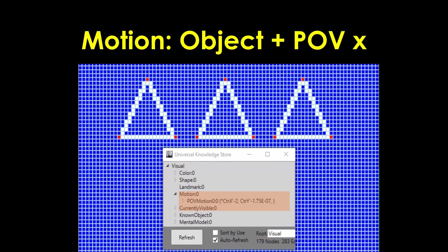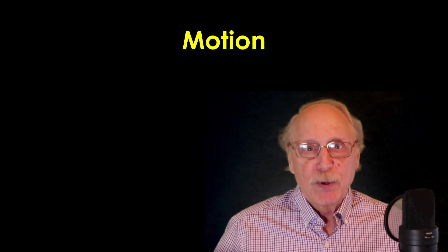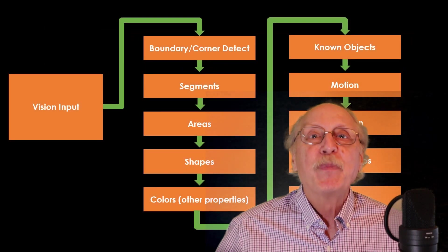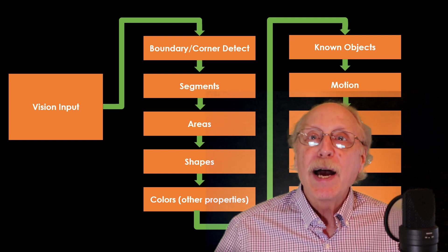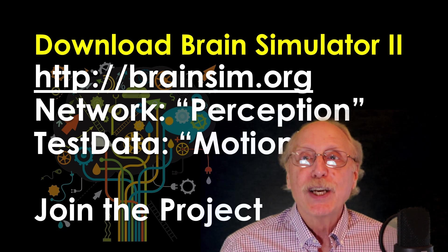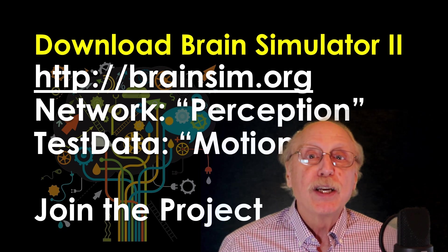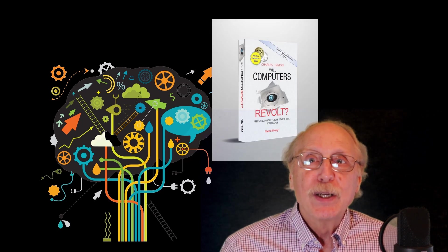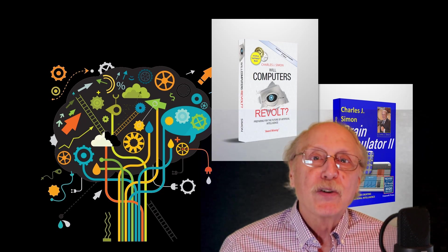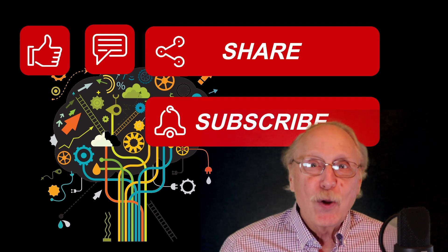Having explored the complexity of understanding object motion with a moving point of view, one can't help but be impressed with the brain's remarkable ability to handle this task. All of this represents just a single step in the perception pipeline, which is part of general intelligence. You can try out all these processes by downloading the brain simulator and using the motion folder of test data. Get the source code and contribute to the project, and for more on how this fits into the overall strategy toward AGI, read books like Will Computers Revolt and The Brain Simulator 2. Links are in the description. Please like, comment, share, and subscribe — thanks for watching.